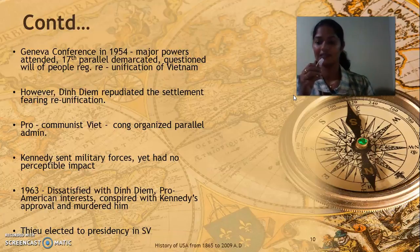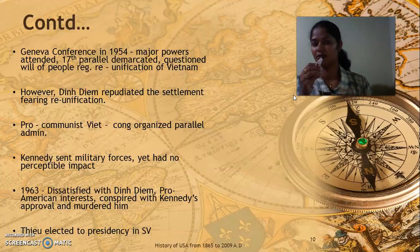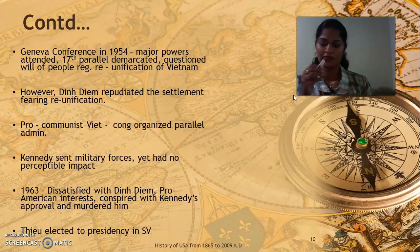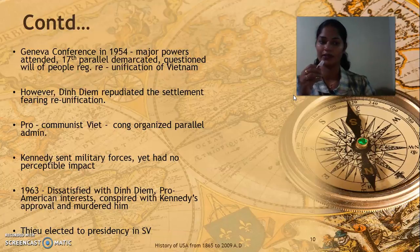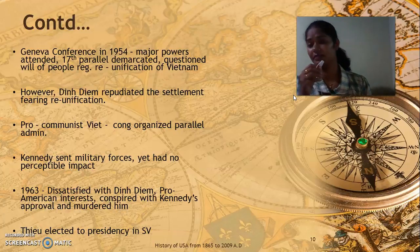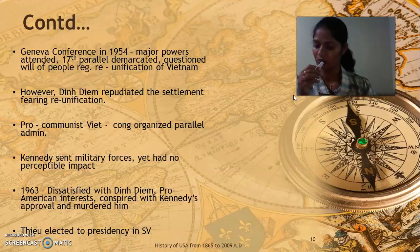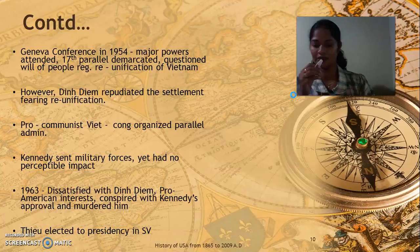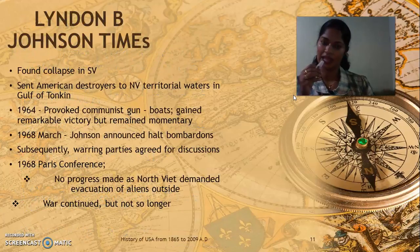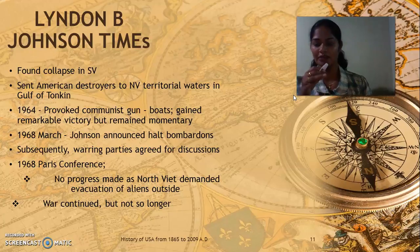In 1963, Kennedy was not satisfied with Diem's administration. A conspiracy plot went on between American officials in South Vietnam and White House personnel, and they murdered Diem. A new leader called D.U. was elected to the presidency in South Vietnam. With that, Kennedy's period was over and Lyndon B. Johnson came to power.